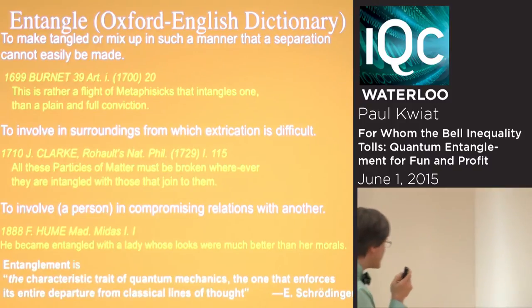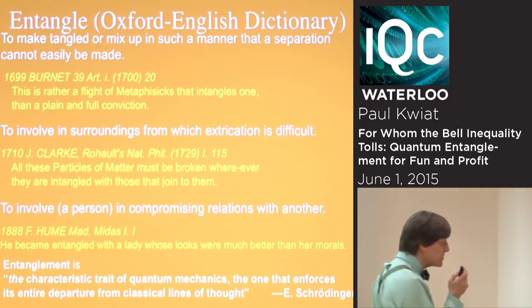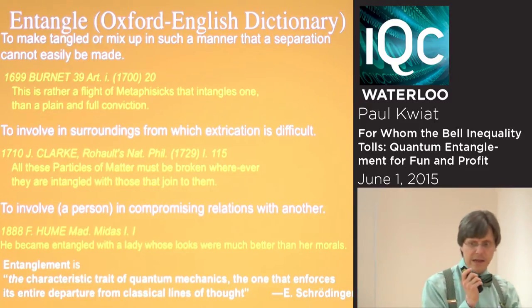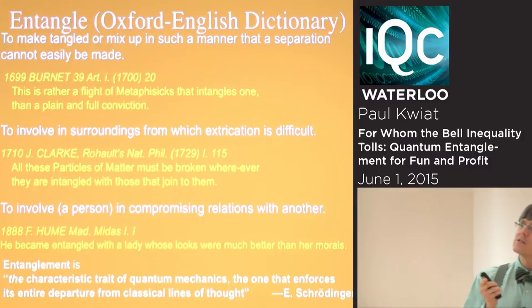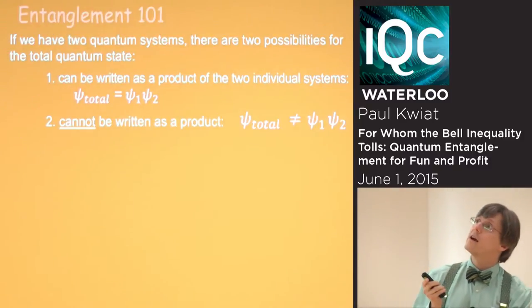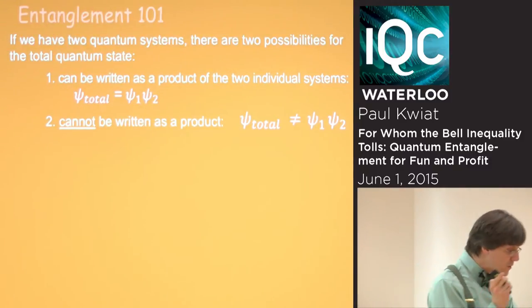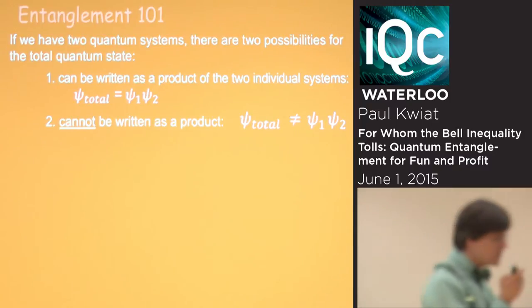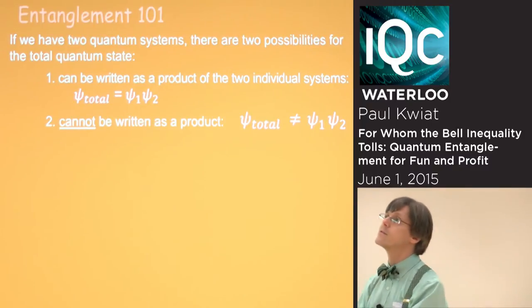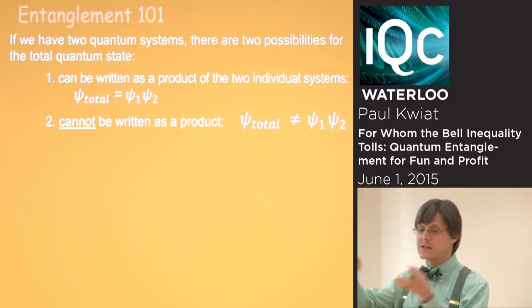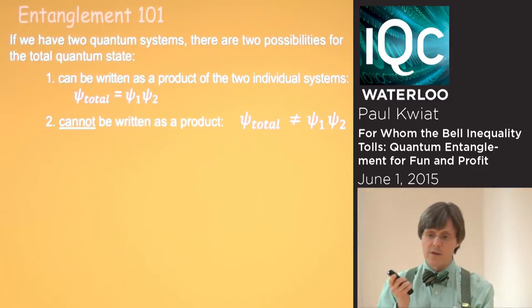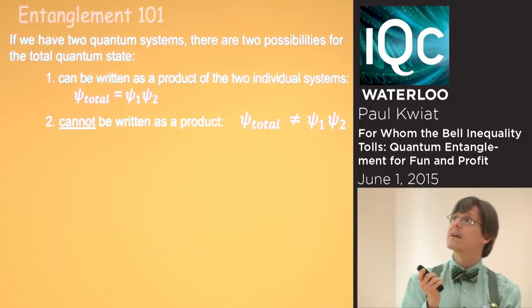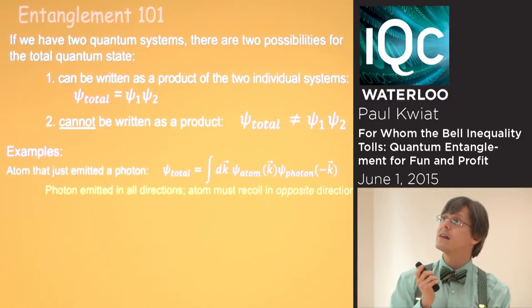I'll use the word in the sense that Schrödinger introduced it — as basically the quintessential quantum mechanical feature, the one that completely distinguishes it from classical lines of thought. We can break quantum states into two categories: either they're states that can be written as a product of the two systems, or they can't — and that's the entangled case.